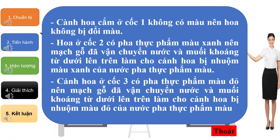Cánh hoa ở cốc 3 có pha thực phẩm màu đỏ nên mạch gỗ đã vận chuyển nước và muối khoáng từ dưới lên trên làm cho cánh hoa bị nhuộm màu đỏ của nước pha thực phẩm màu.